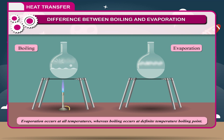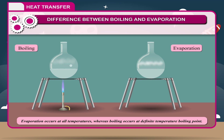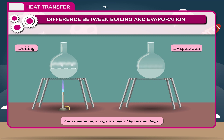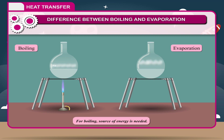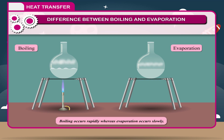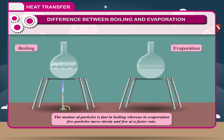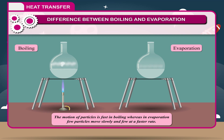Evaporation occurs at all temperatures, whereas boiling occurs at a definite temperature — the boiling point. For evaporation, energy is supplied by the surroundings. For boiling, a source of energy is needed. Boiling occurs rapidly whereas evaporation occurs slowly. The motion of particles is fast in boiling, whereas in evaporation few particles move slowly and few at a faster rate.